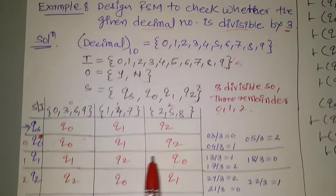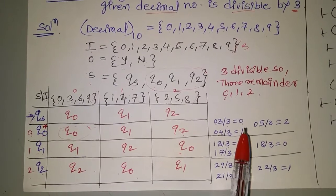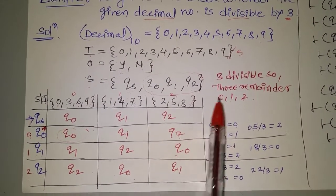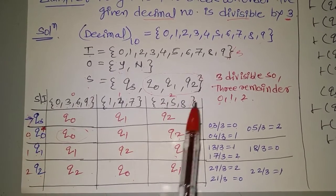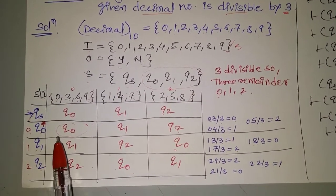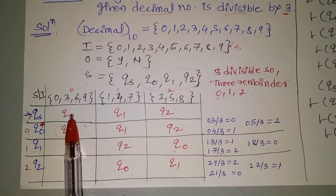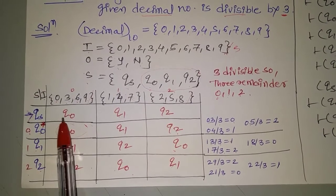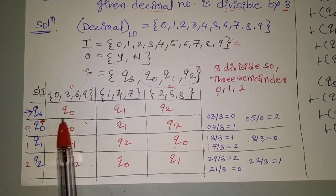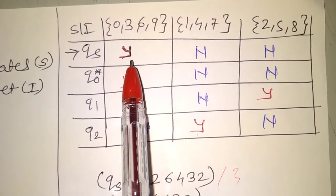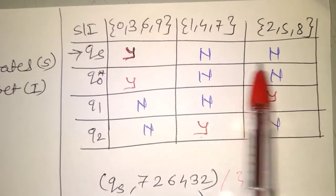The same structure is converted and developed into the machine table. The machine table structure and the state table structure are both the same, but there is only one difference: the Q0 state is represented as Y, meaning yes, because Q0 is the final state. That's why we write yes for Q0, and the remaining states are written as no.